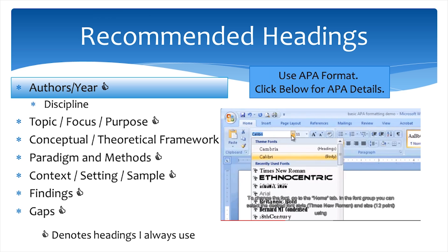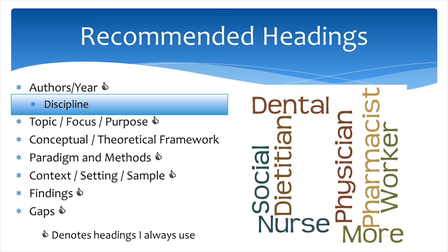You can also note the country later in the table. Discipline may also be useful to note, either in the same column or a separate one, if you are looking at a multidisciplinary topic, such as hand hygiene practices. It can help you identify if you need to consider looking in other areas to capture missing disciplines, or if there is a lack of evidence particular to a discipline. However, if your literature review is focused on a particular discipline, such as nursing, then this information would not add anything to your table and should not be used.